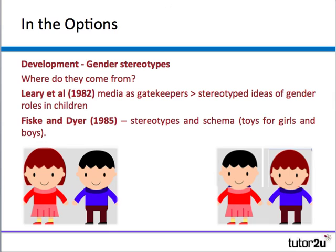In the development option, regarding gender stereotypes — where do they come from? Leary points to the media as gatekeepers: the media puts forward stereotypes of gender roles in children and adults, and children take them on by the time they are two or three years old. Fiske and Dyer look at stereotypes and schema through toys for girls and boys, and how girls will resist playing with boys' toys and vice versa because they don't fit into the schema.